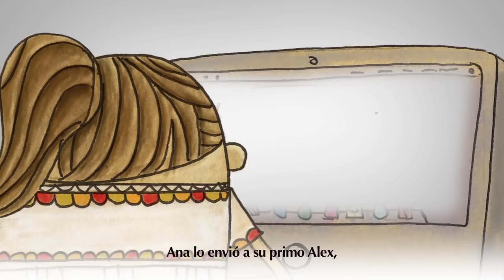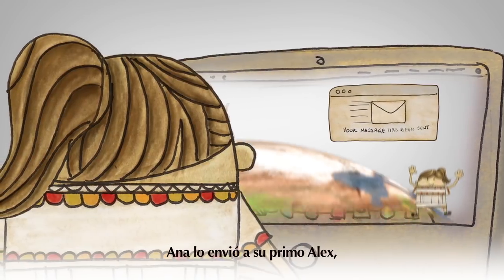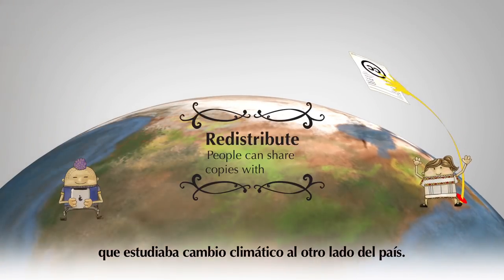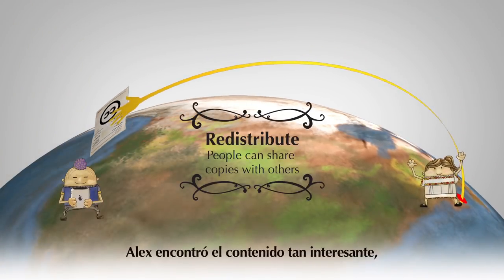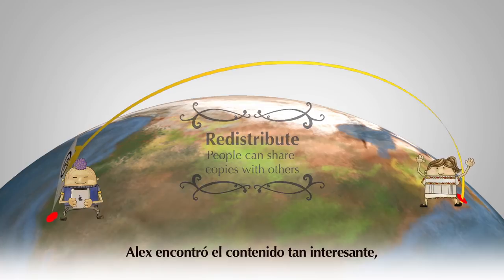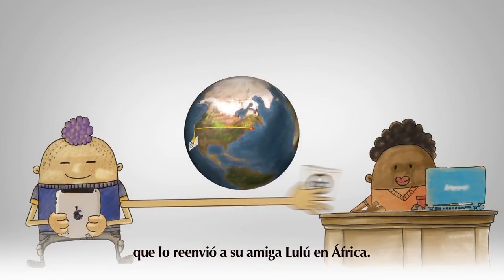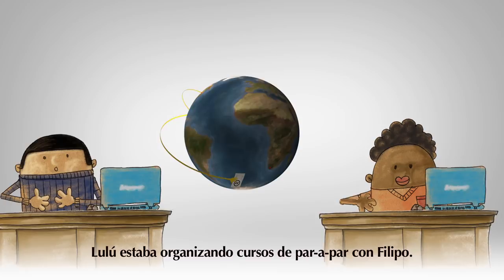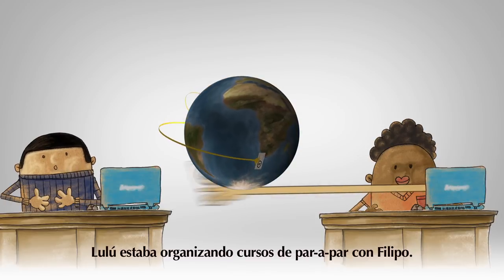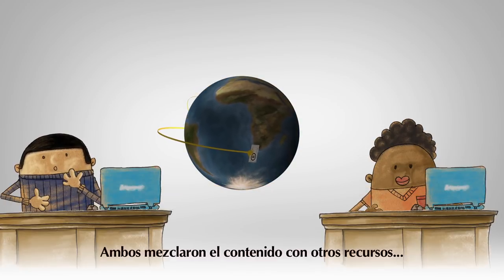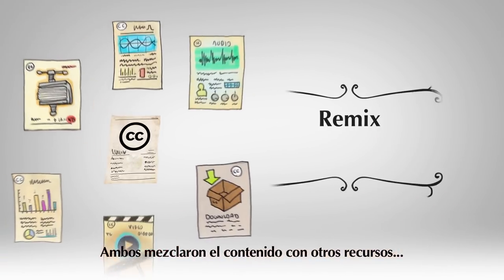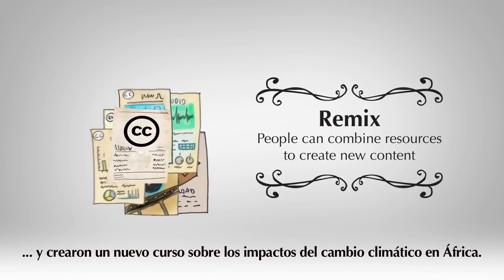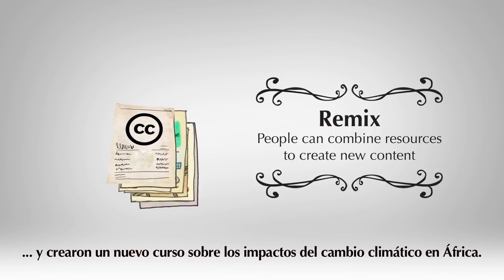Anna sent the course's content across the country to Alex, who was studying climate change. Alex found it so interesting that he forwarded a copy to his friend Lulu in Africa. Lulu was developing peer-to-peer courses with Philip, so they remixed the content with other resources and created a new course about the impacts of climate change in Africa.